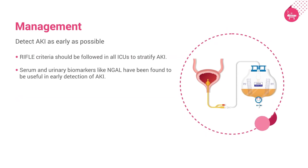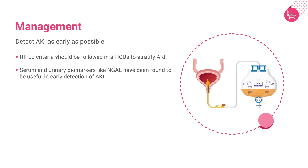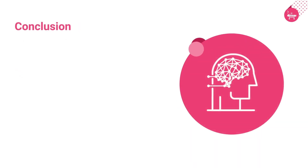Detect acute kidney injury (AKI) as early as possible. The RIFLE criteria — Risk, Injury, Failure, Loss, End-stage kidney disease — should be followed in all ICUs to stratify AKI. Serum and urinary biomarkers like NGAL (neutrophil gelatinase-associated lipocalin) have been found useful in early detection of AKI. Limitations of these parameters for differentiating pre-renal from renal injury include use of diuretics, post-IV contrast, CKD, elderly patients, acute glomerulonephritis, acute interstitial nephritis, hyperglycemia, and hepatorenal syndrome.